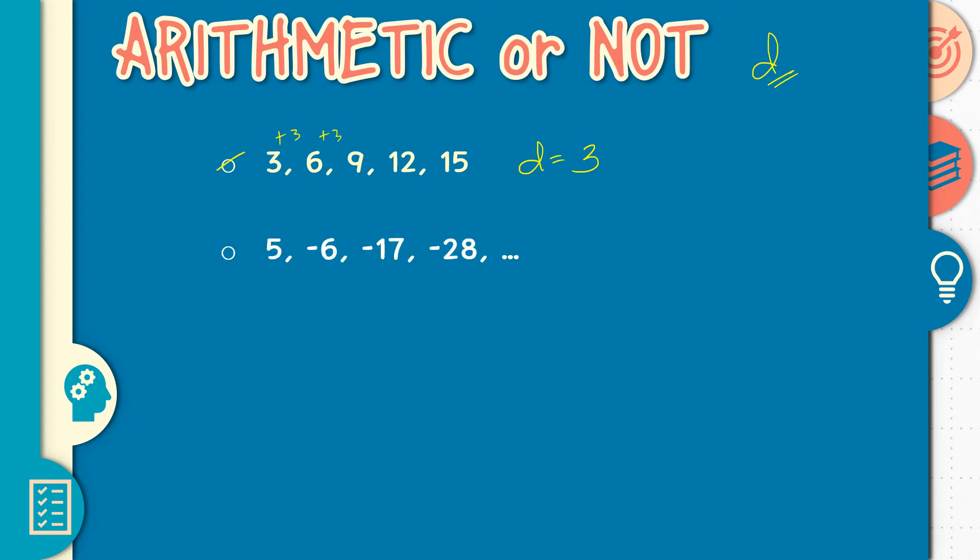Next: 5, negative 6, negative 70, negative 28. Mamuhay naman may negative. Ganon din yung class. This is an arithmetic sequence and our common difference is yes, negative 11.